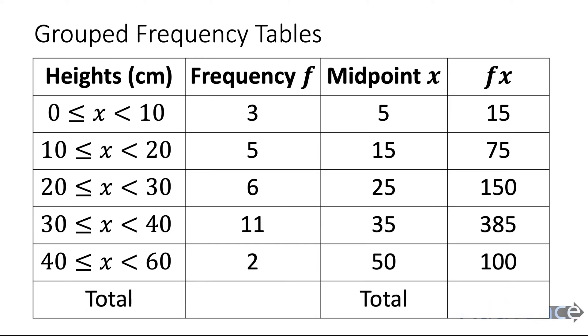Now we add another column for those totals. We add up the total frequency. 3 plus 5 plus 6 plus 11 plus 2 is 27.